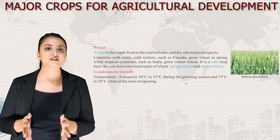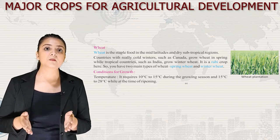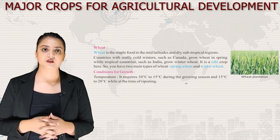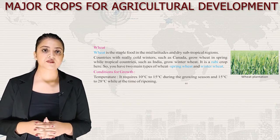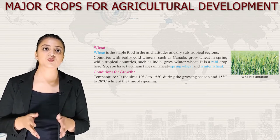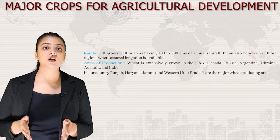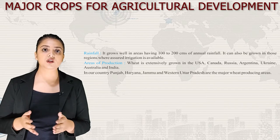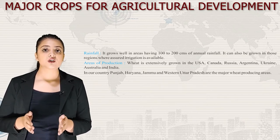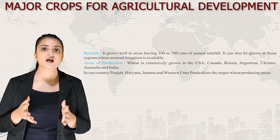Next we have wheat — the staple food in the mid-latitudes and dry subtropical regions. Countries with cold winters like Canada grow spring wheat, while tropical countries like India grow winter wheat (a rabi crop). Conditions for growth: temperature 10°C to 15°C during the growing season and 15°C to 28°C at ripening; rainfall 100 to 200 cm or assured irrigation. Wheat is extensively grown in the USA, Canada, Russia, Argentina, Ukraine, Australia and India. In India, Punjab, Haryana, Jammu and Western Uttar Pradesh are the major wheat producing areas.